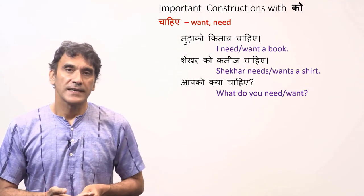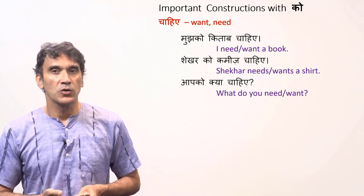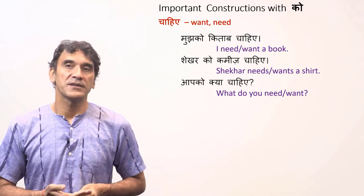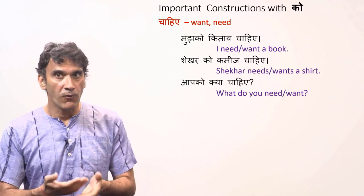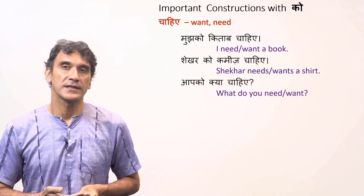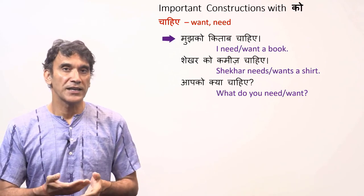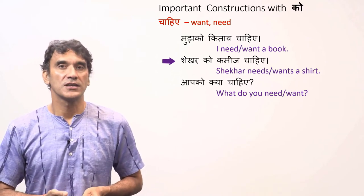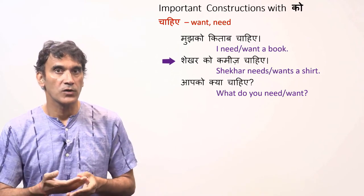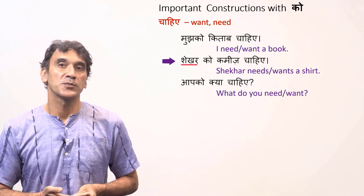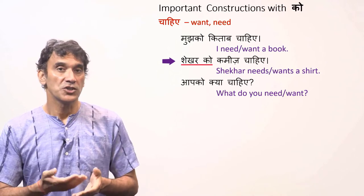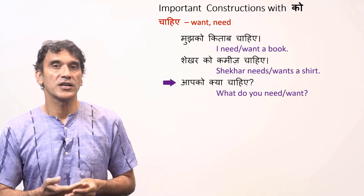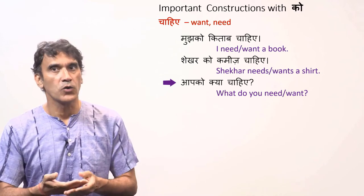Another common phrase that takes the subject with the postposition ko is chahiye. The phrase chahiye can be translated into English with the verb want or need based on the context. Mujko kitab chahiye — I need a book, I want a book. Shekhar ko kamish chahiye — Shekhar needs a shirt, Shekhar wants a shirt. Here you can see the postposition with the noun: Shekhar ko. Another common sentence: Aapko kya chahiye — What do you need? What do you want?